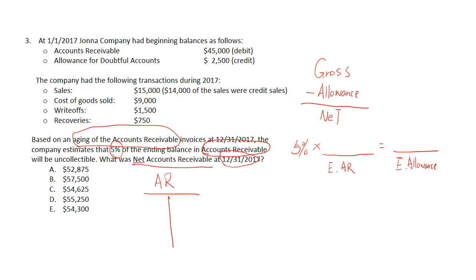The beginning balance of accounts receivable is $45,000. Credit sales generated by the company are $140,000, so we debit accounts receivable. The cost of goods sold is unrelated to this question so we ignore it. The write-off is $15,000, so we debit allowance and credit accounts receivable. The recovery debits cash and credits allowance, so there is no effect on accounts receivable. The ending balance of accounts receivable calculates to $575,000.